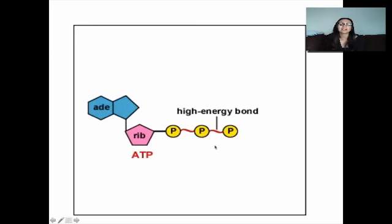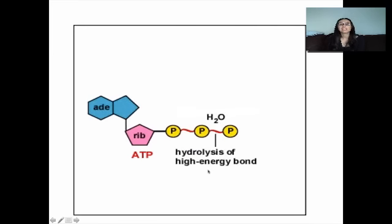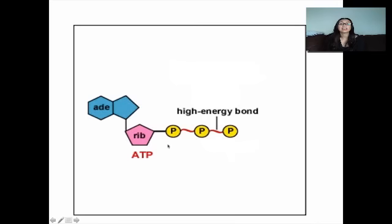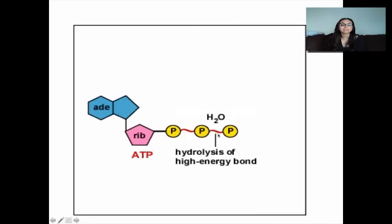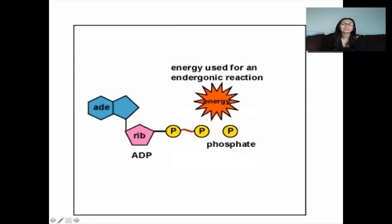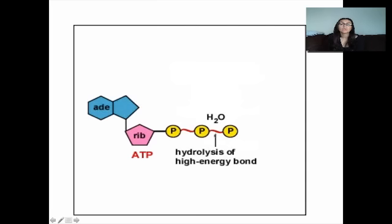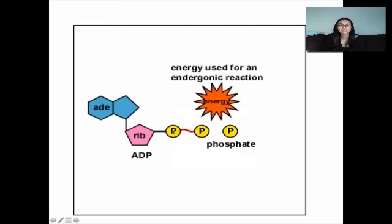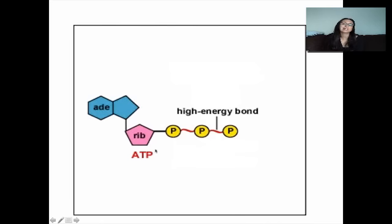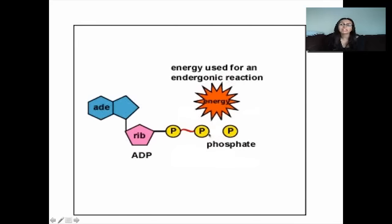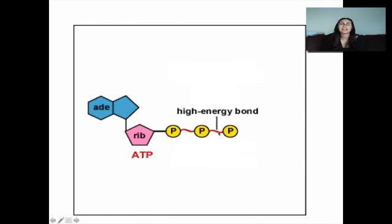Here we have ATP — there's lots of energy stored in this bond right here. When you break this bond, you release lots of energy to power chemical reactions. When we create this bond we have ATP: one, two, three phosphates. When we break the bond to use it for chemical reactions and release the energy, now we have ADP: one, two. The difference between ATP and ADP is how many phosphates are connected — that bond is what stores the high amount of energy.